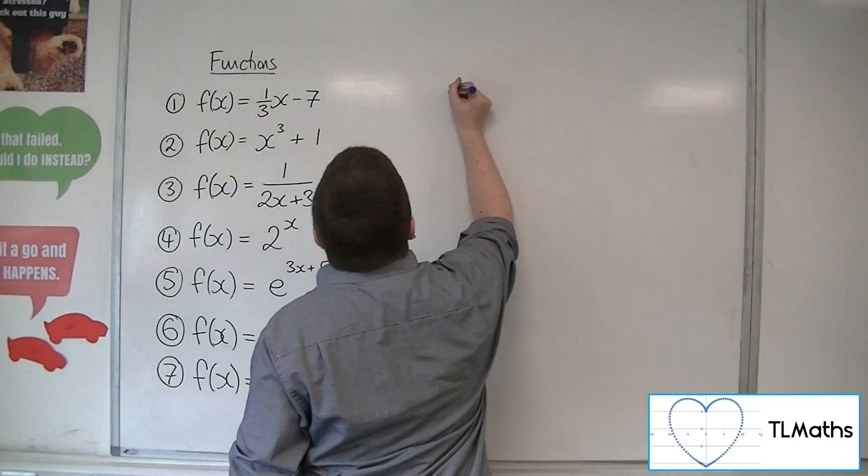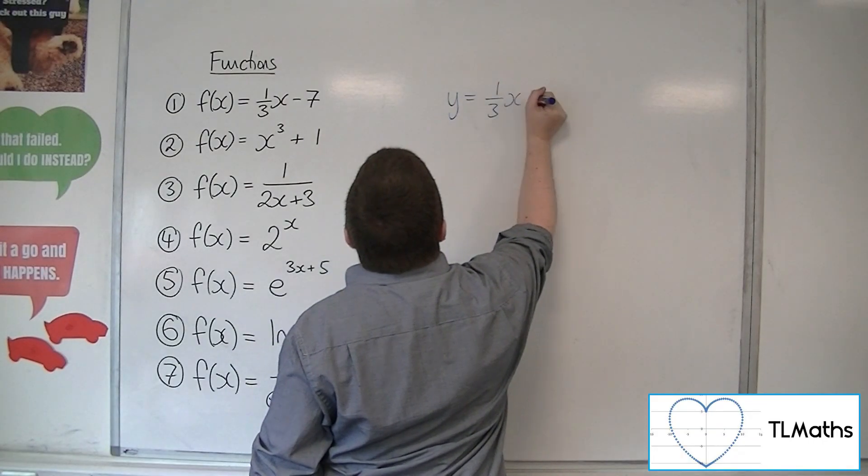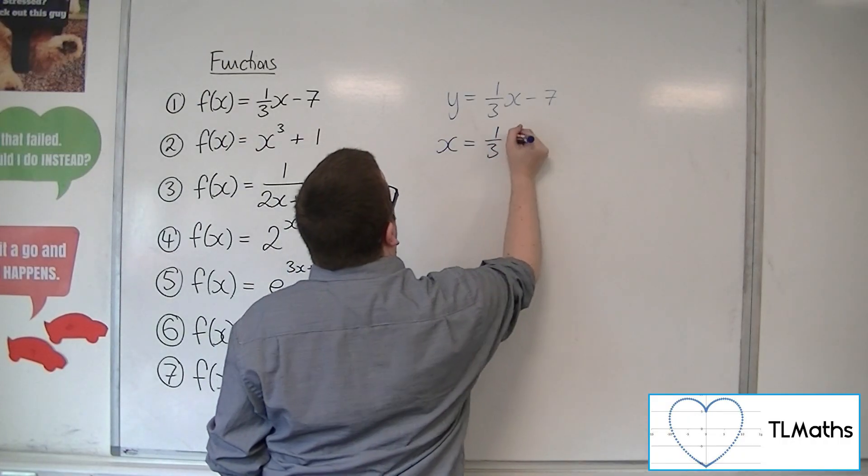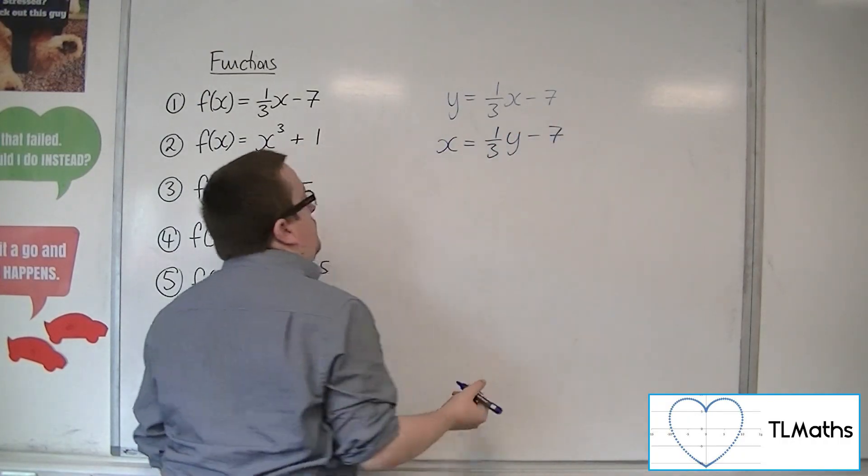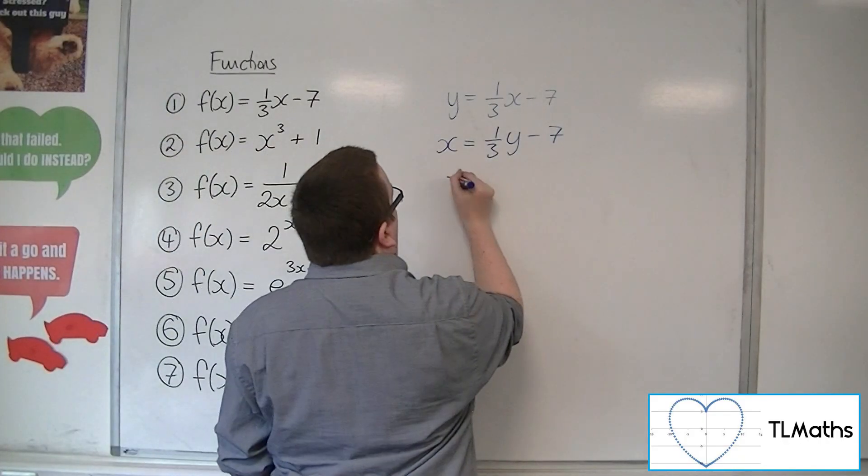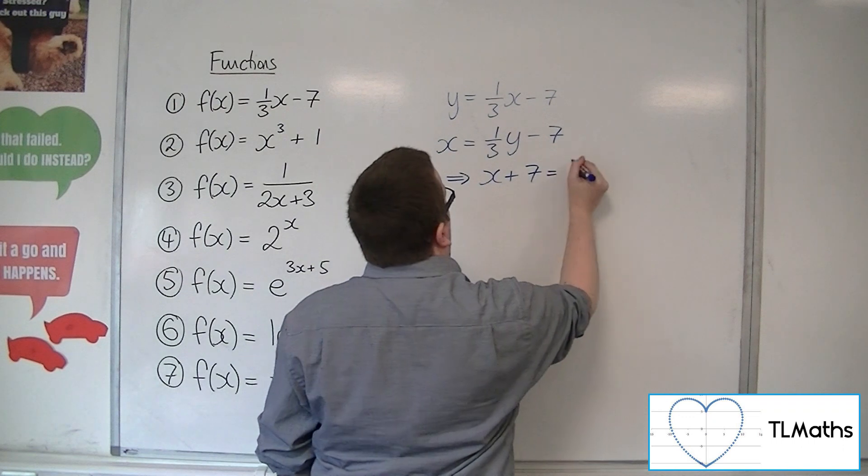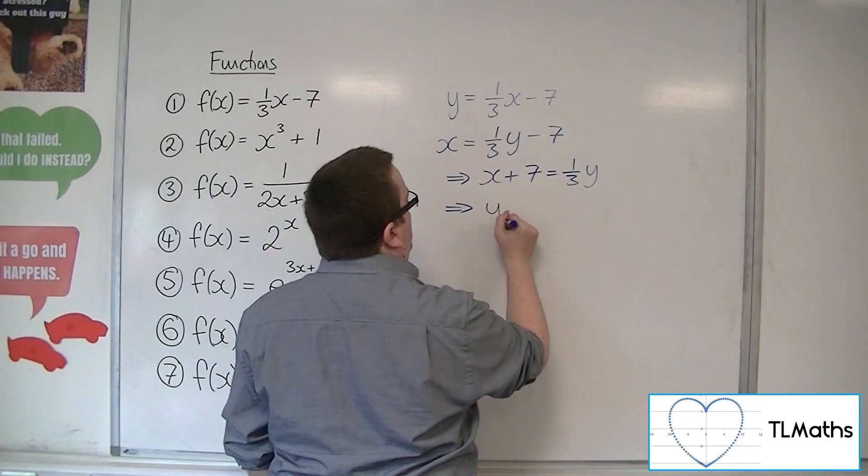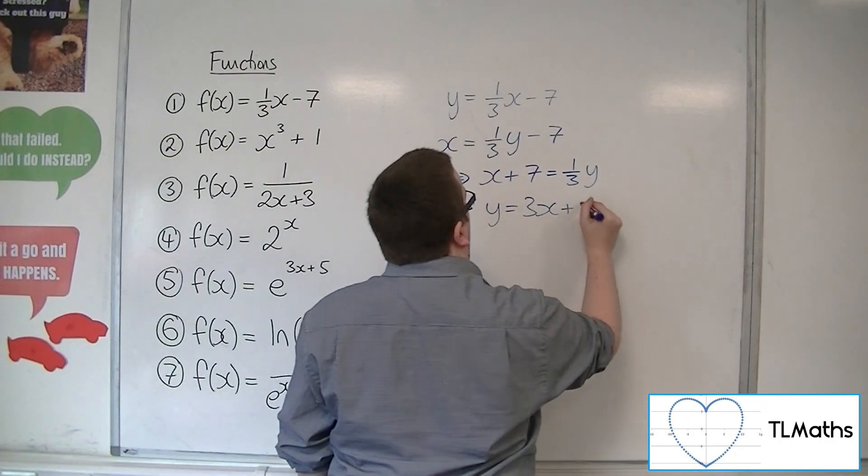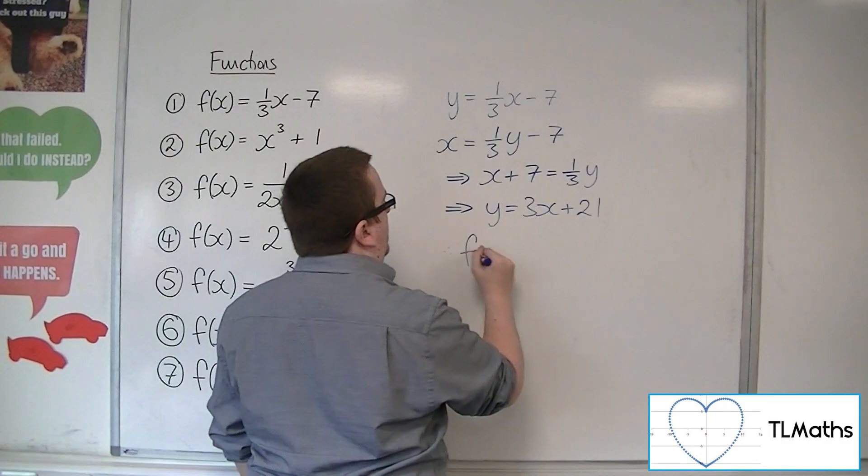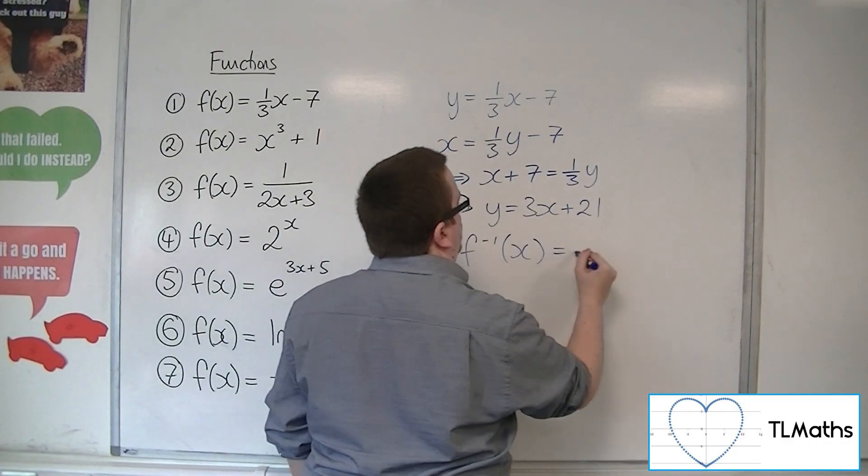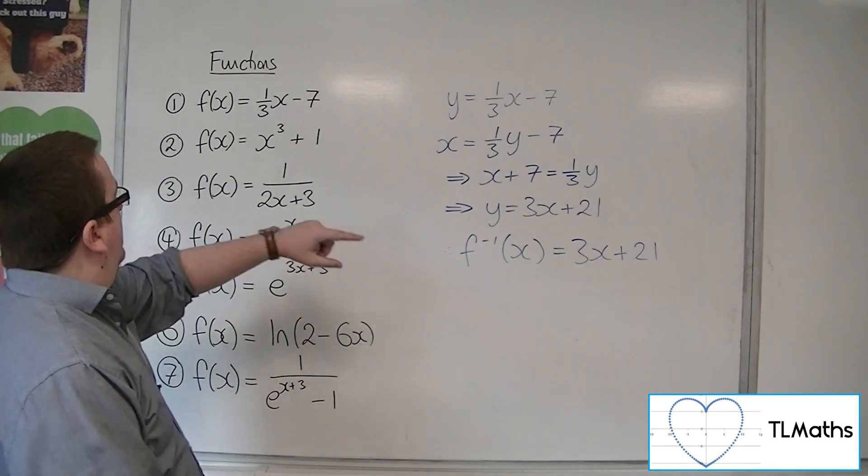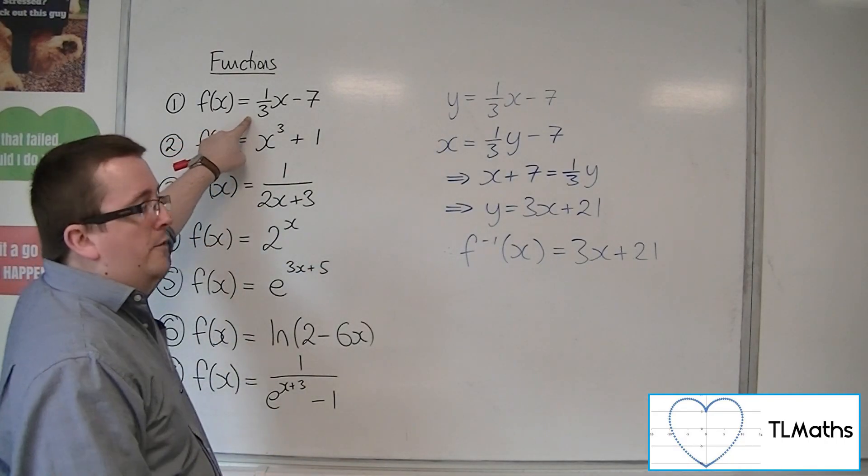We first of all write y = 1/3x - 7, swap the x's and y's, and then rearrange to get y equals. So we're going to add 7 to both sides to start off with, and then I'm going to multiply both sides by 3. So y = 3x + 21. That means the inverse function is 3x + 21. And that is the first inverse function for number one.